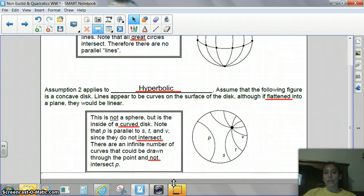Note that P is parallel to S, T, and V. Now, this is not what you would typically think of as parallel, but the rule for parallel says it's on the same plane, but the lines never touch. And if you look at that, that is true about line P. It never touches S, T, or V.